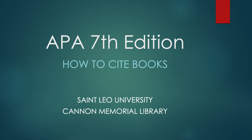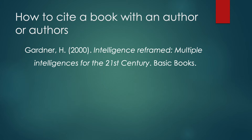APA 7th edition — how to cite a book with an author or authors. Start with the author's name: put their last name, comma, and then their initials. Next, put the year of publication in parentheses followed by a period. Then put the title, which will be in italics and also in sentence case.